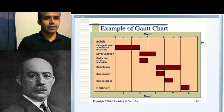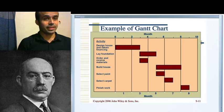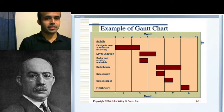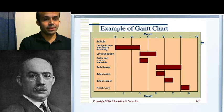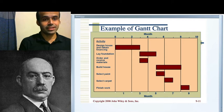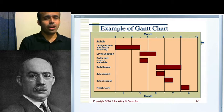You can see a picture on the screen. You can see some red lines there, and in the chart the activities written are: design house and obtain financing, lay foundation, order and receive materials, building house, select paint, select carpet, and finish work.